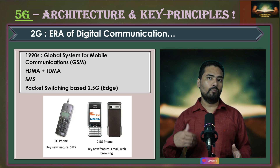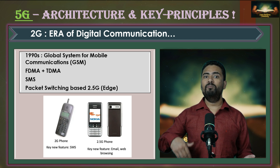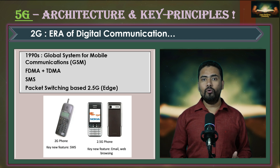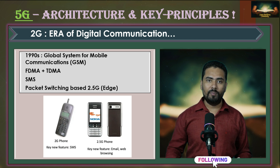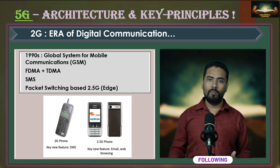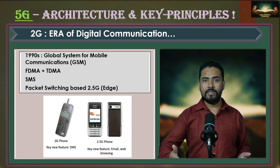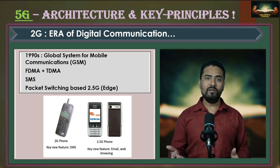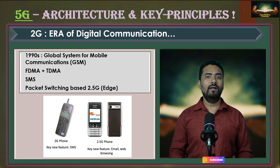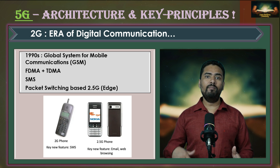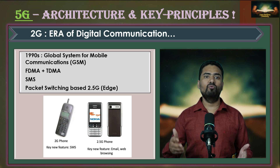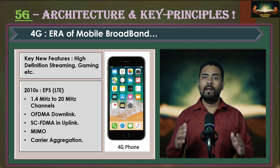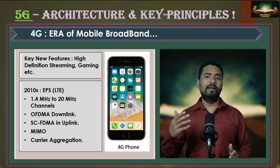Those digital systems also supported new services like texting and even picture messaging, although at very low speeds. This was further evolved by introducing a packet switch domain as an addition to the circuit switch domain, sometimes referred to as 2.5G or EDGE. This offered better services to users — now they could send and receive emails, and even web browsing was possible at speeds of 64 kbps to 144 kbps. In 2008 or 2009, LTE was introduced as a fully packet switch technology — that was the start of 4G.